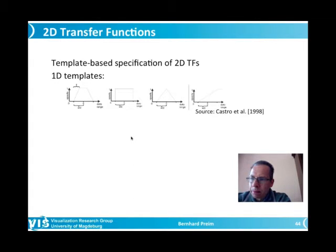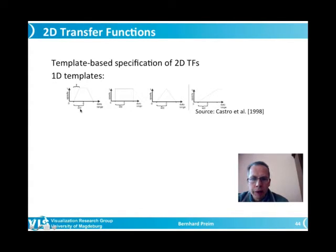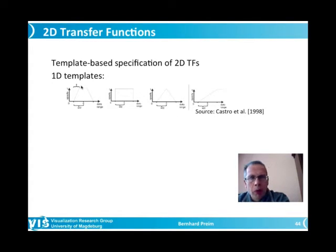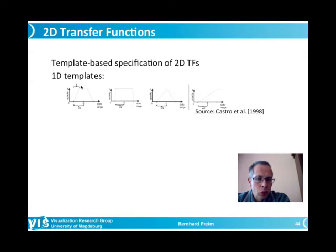We also discussed the idea of supporting transfer function specification by templates. We looked at one-dimensional templates using the example of Castro and colleagues, where tent-like, ramp-like, or trapezoidal functions can be created with a few parameters — like the half window size or the steepness of a trapezoidal function. If we use two-dimensional transfer functions and the second dimension is gradient magnitude, curvature, or the size or shape of features, we have continuous values in a two-dimensional domain, and one can think of similar templates for 2D transfer functions.